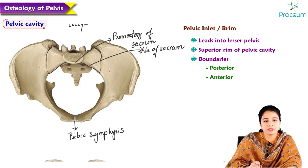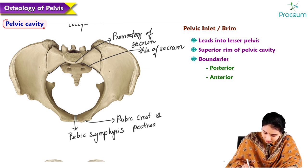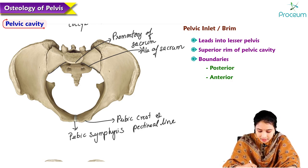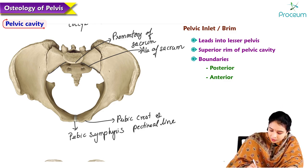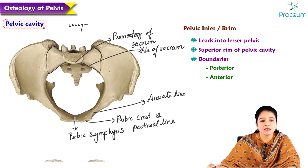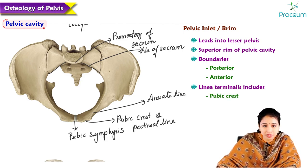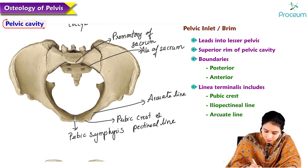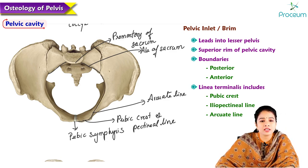Anteriorly, from the midline, the pelvic inlet is formed by the pubic symphysis. On each side of the pubic symphysis there is the pubic crest and pectineal line, which continue laterally as the arcuate line forming the margin of the pelvic brim. The arcuate line continues with the ilium as the linea terminalis, which includes the pubic crest, ileopectineal line, and arcuate line together.